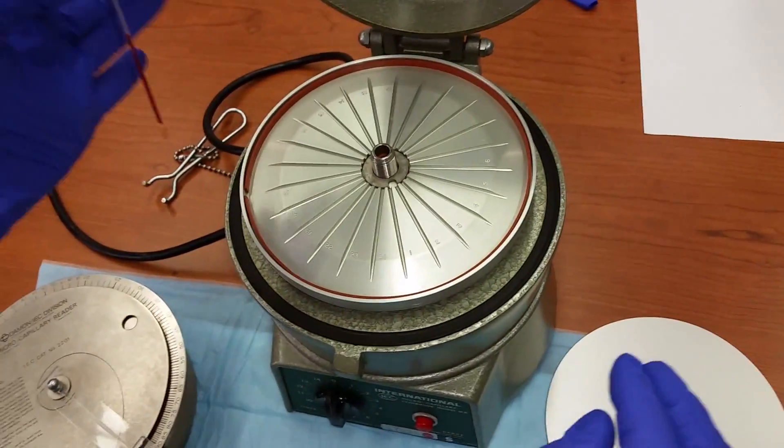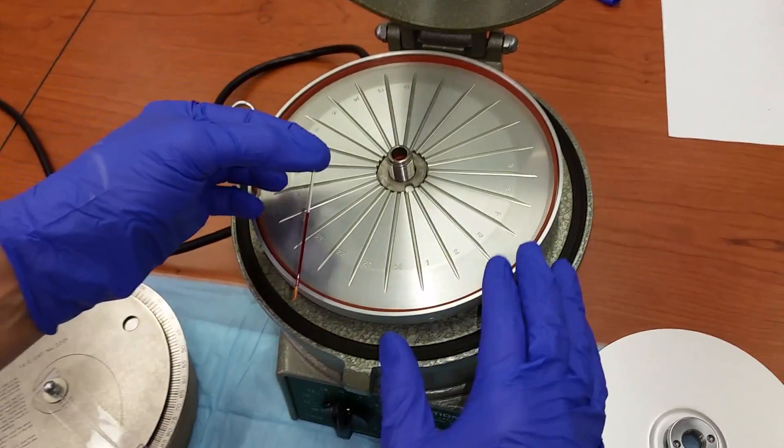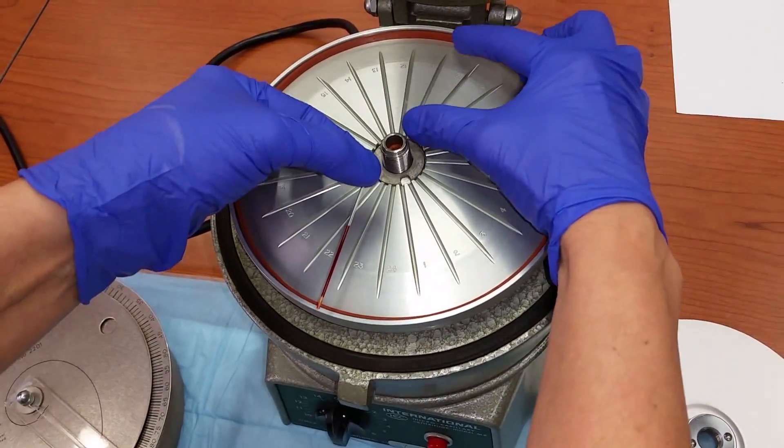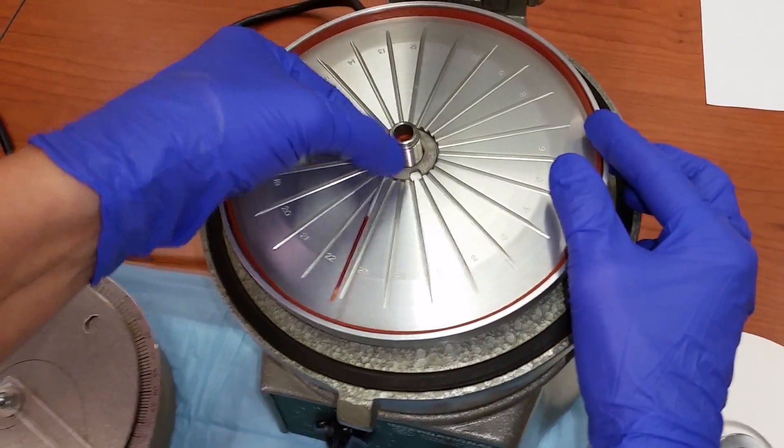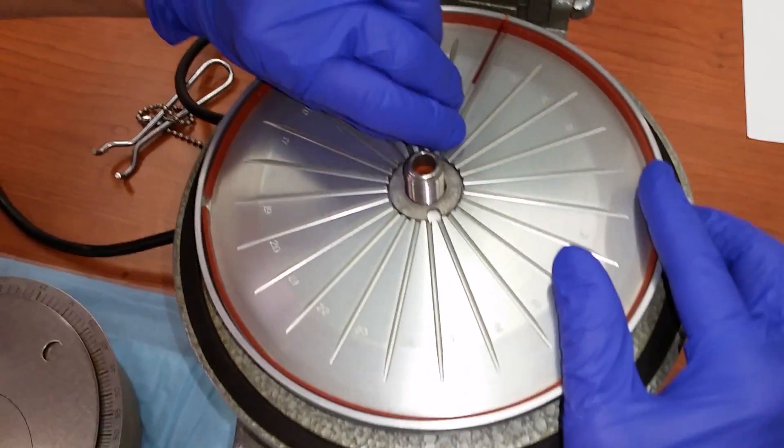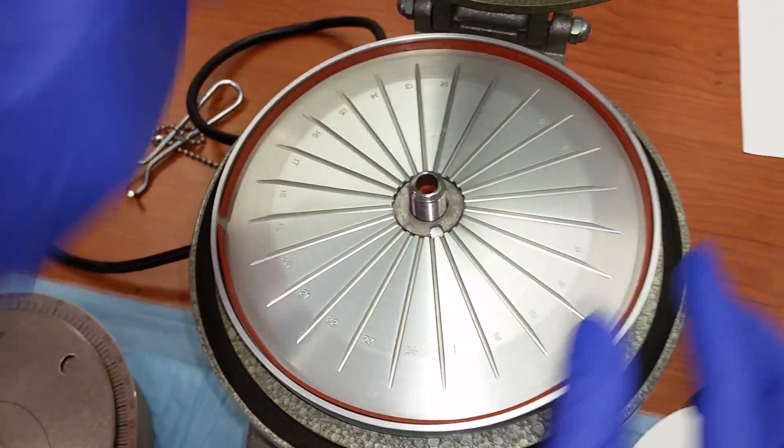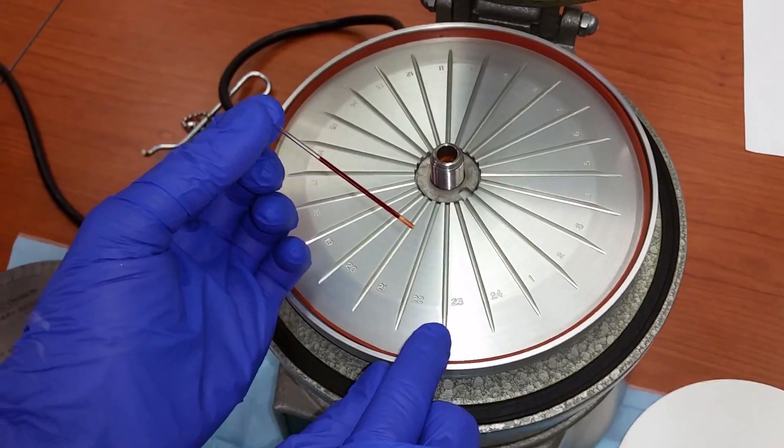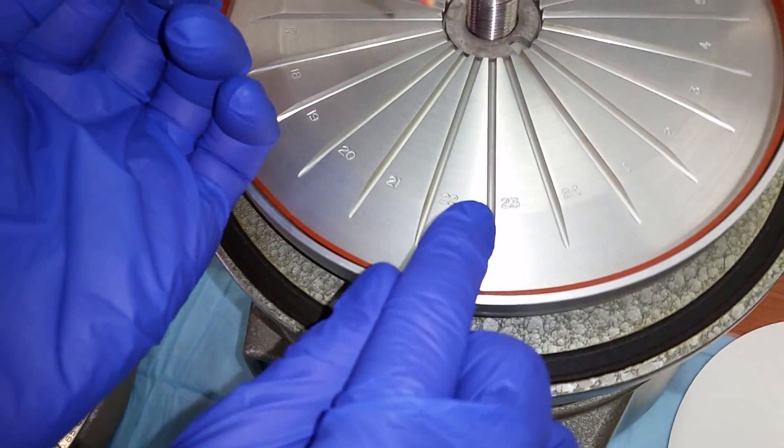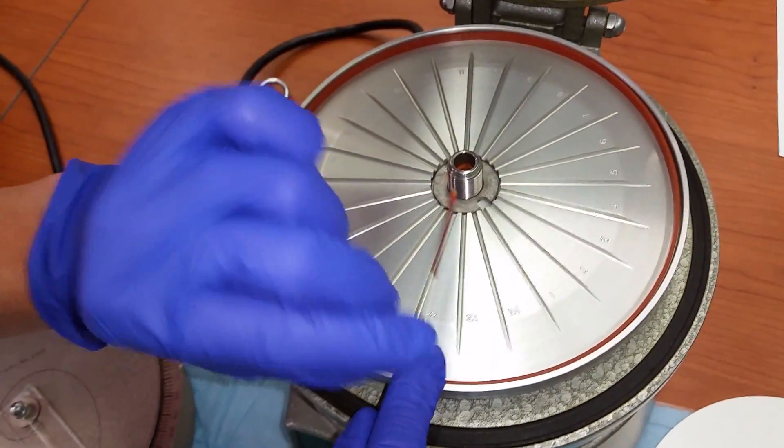Remembering that this is a centrifuge, you need to make sure that the slots are balanced with capillary tubes. If you put a capillary tube in one side, you need to make sure to balance it with a capillary tube on the second side. Because the tubes are obviously too small to write your names on, each of the slots are numbered, so remember the number in which you've put your tube.